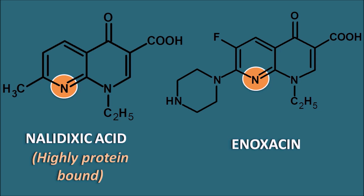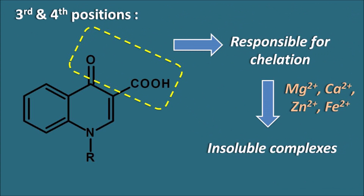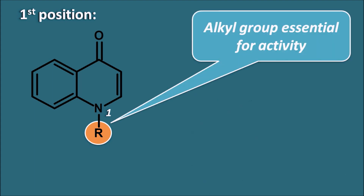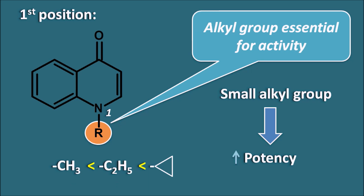Nowadays, whatever drugs are available in the market are mainly having the quinolone ring system. Let us now go through the structural activity relationships of quinolone drugs at different positions. At the first position, an alkyl group is essential for activity. Without an alkyl group, activity is reduced. Small alkyl groups increase potency — groups like CH3, C2H5, and cyclopropyl may increase the activity.